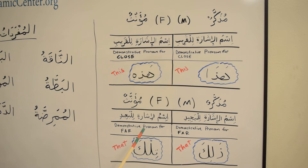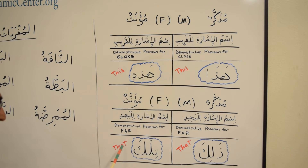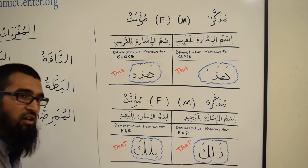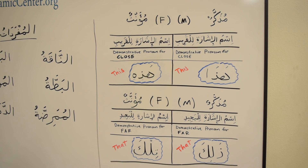In this lesson we will learn the Ismulisharati lilbaeid — the demonstrative pronoun for far — that is also feminine, Muannath. And it is Tilka, which translates as 'that.' So if you see a car far away, you say Tilka Sayaratun — that is a car. If the car is close, you say Hadhihi Sayaratun. To recap: Hadha, Thalika, Hadhihi, Tilka. This is a very easy lesson.